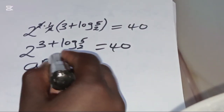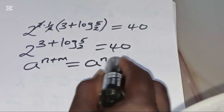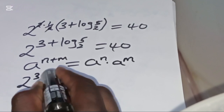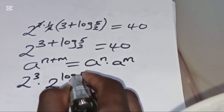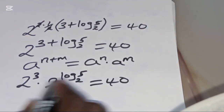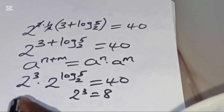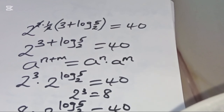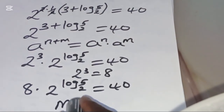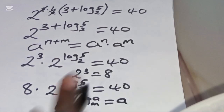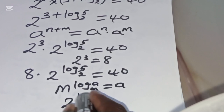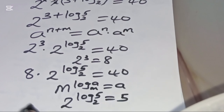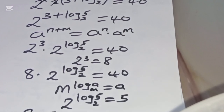Now 2^(3 + log₂5) is in the form a^(n+m) = a^n × a^m. Applying this property: 2³ × 2^(log₂5) = 40. Since 2³ = 8, we have 8 × 2^(log₂5) = 40. Since 2^(log₂5) = 5 by the identity m^(log_m(a)) = a, we get 8 × 5 = 40.